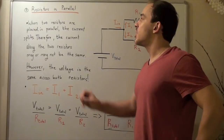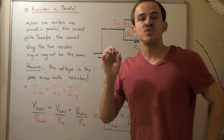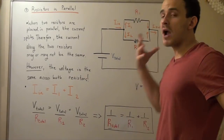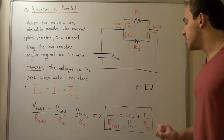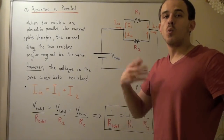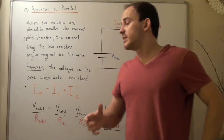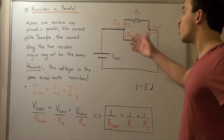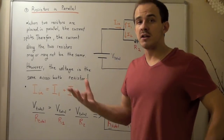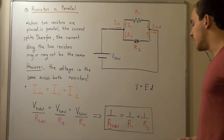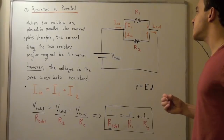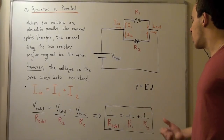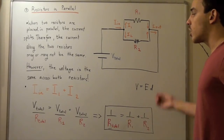Whenever we deal with resistors in parallel, the total resistance is found using: 1 over R total equals 1 over R1 plus 1 over R2. This formula is for two resistors. If we have three, four, five, or more resistors all in parallel, we simply extend the formula. With three resistors: 1 over R total equals 1 over R1 plus 1 over R2 plus 1 over R3.